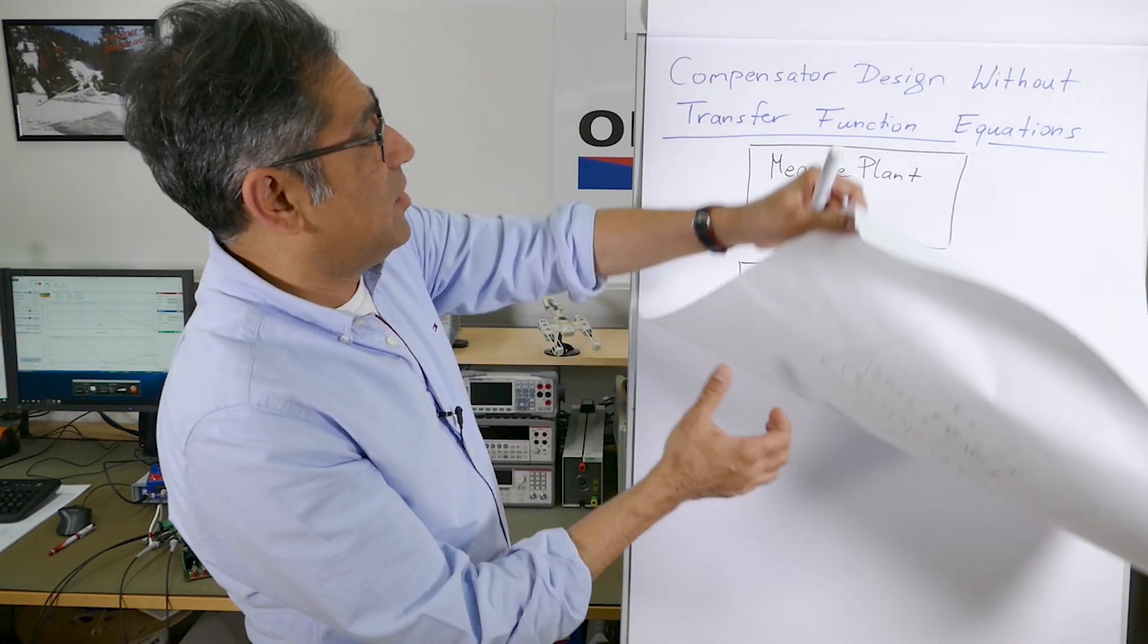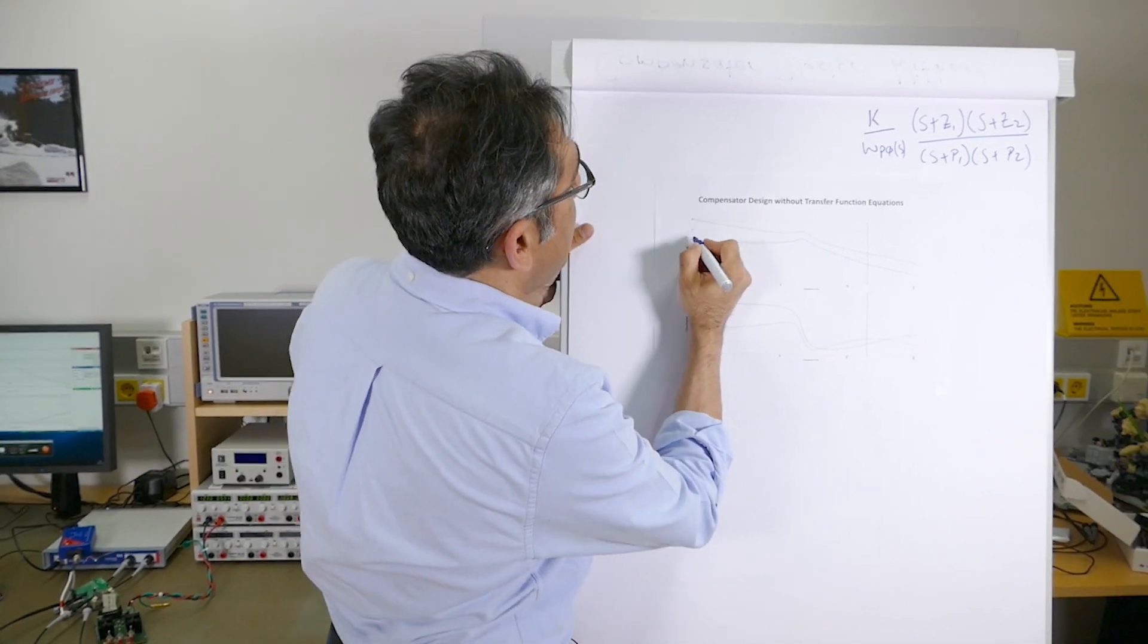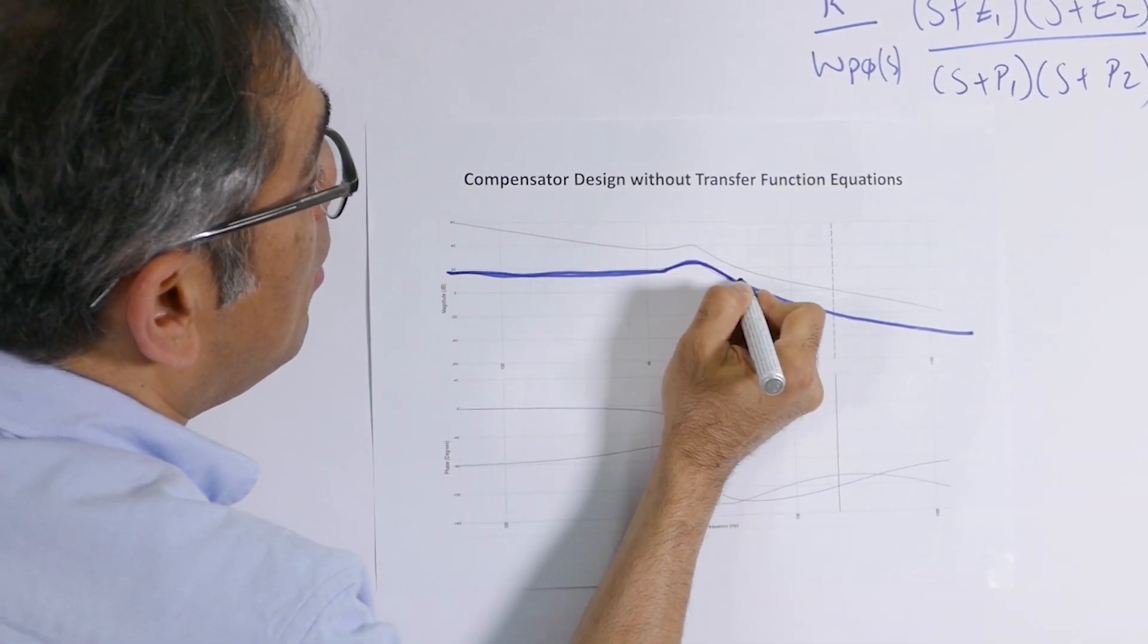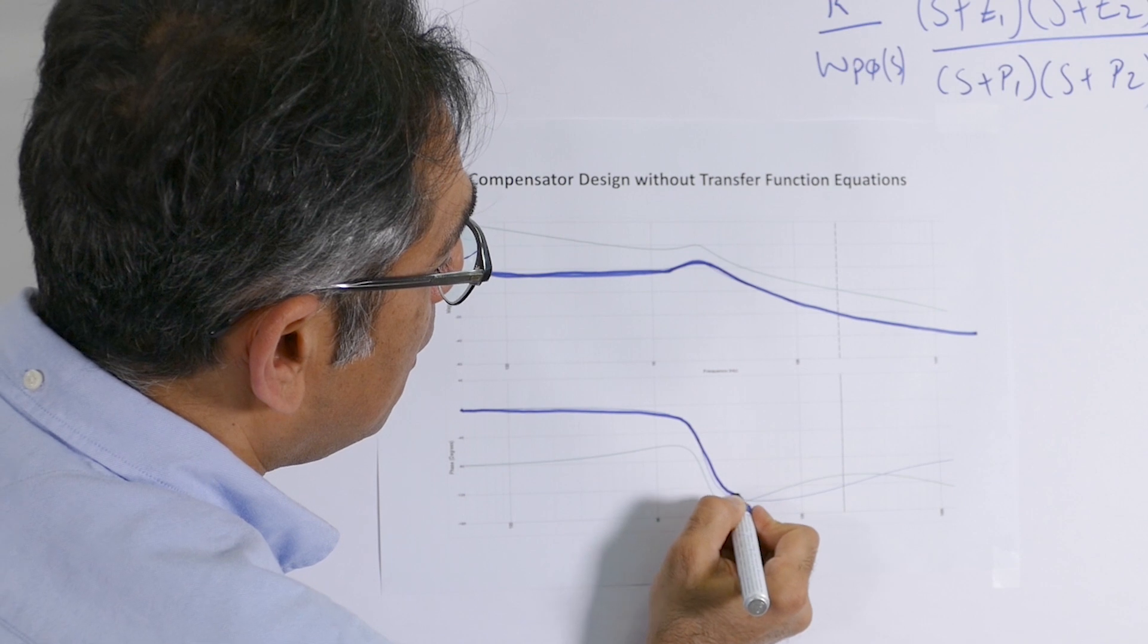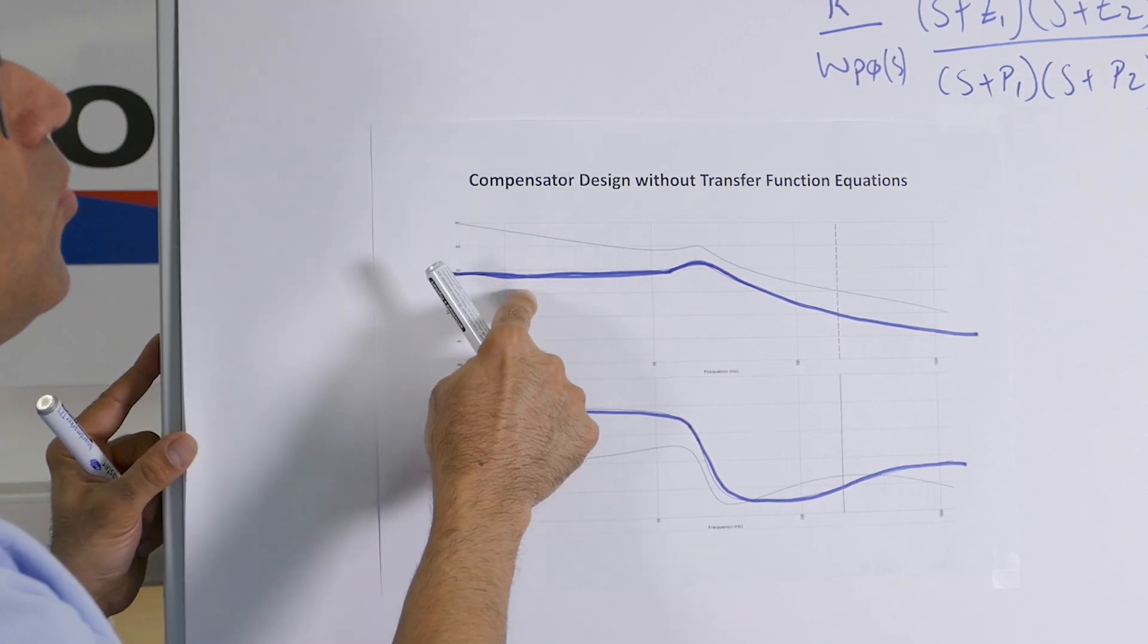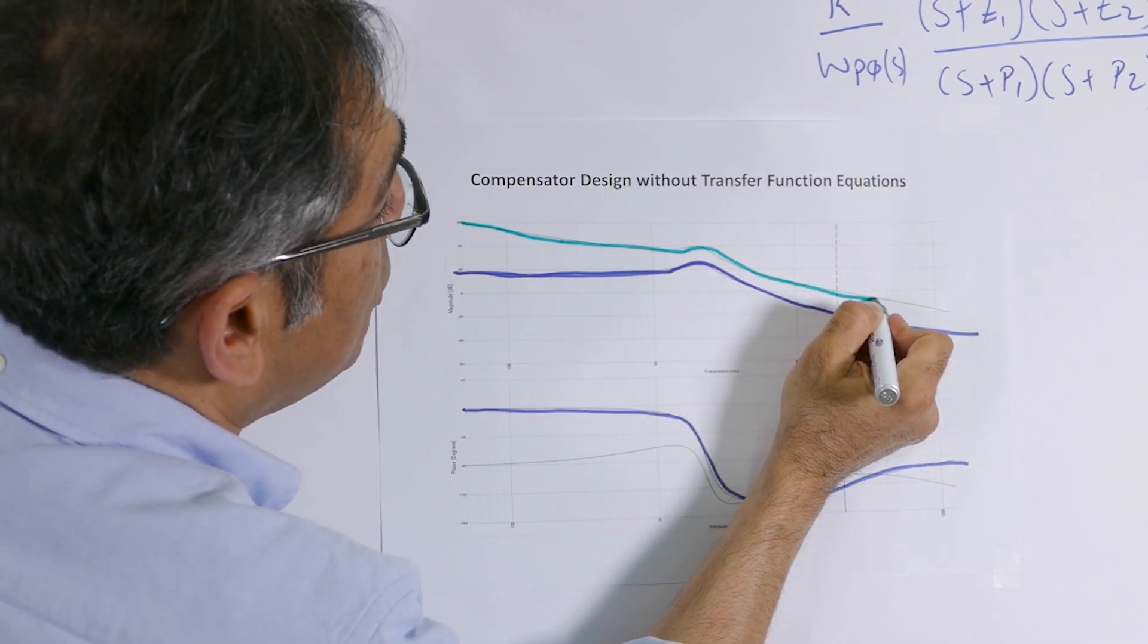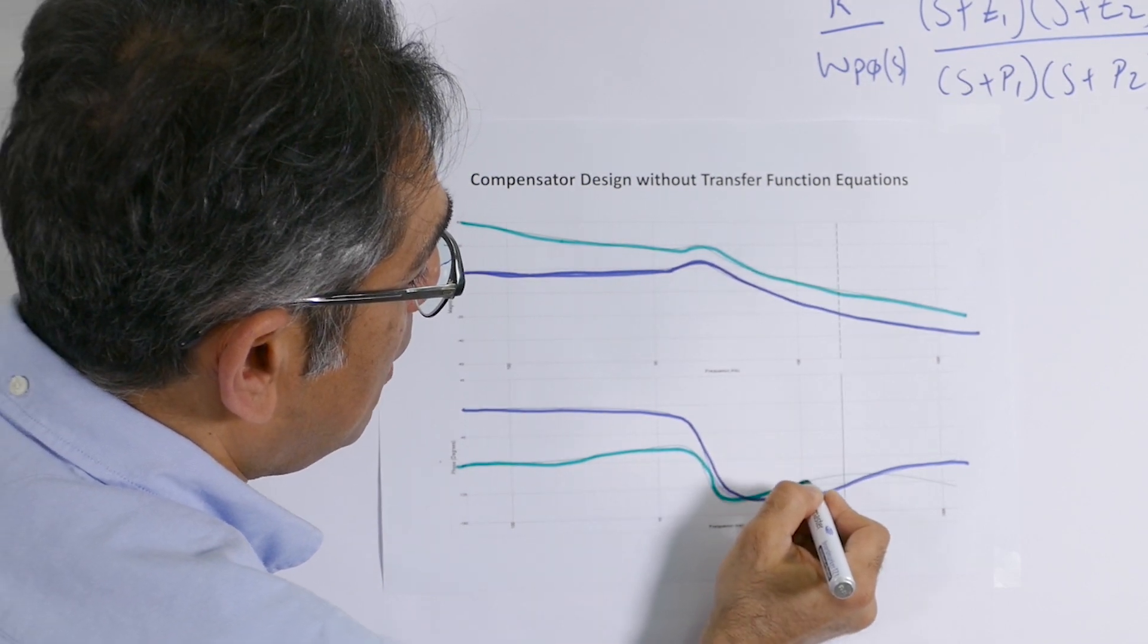If I show you this on a different plot here, the blue trace is the plant—this is for a voltage mode buck converter, but as I said, I don't even need to know what the topology is. That was my gain and this is my phase. What I need to do is shape this so it starts looking like the green line, which is the stabilized power supply with good gain margin, good phase margin and so on.